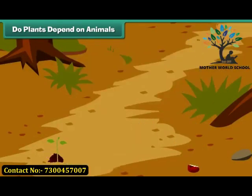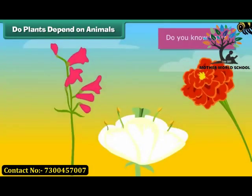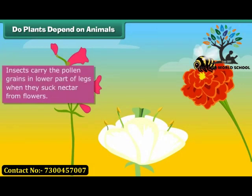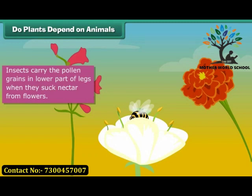Plants depend largely on animals to produce their seeds via seed dispersal. Many insects, bees, and butterflies carry pollen grains on the lower part of their legs when they sit to suck nectar from flowers. As they move from flower to flower, they spread the pollen — this is how they help spread plant seeds.